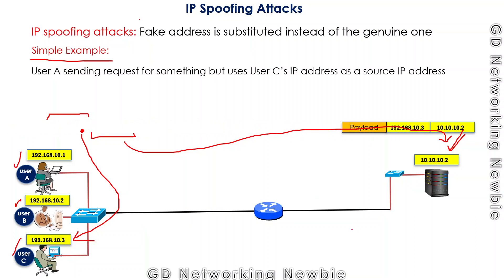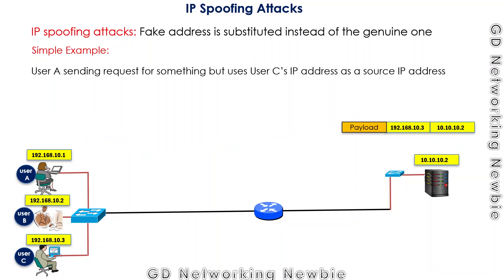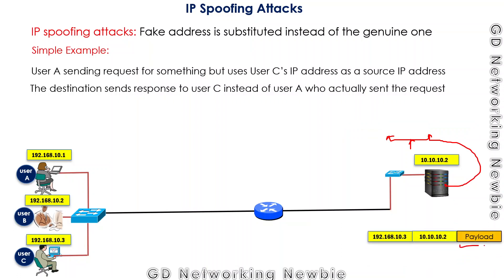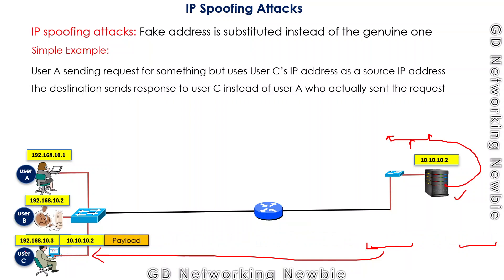As a result, the message is sent to the destination requesting information. At the destination, the machine sees that the information was requested by a host having that spoofed IP address, so it believes that is the source. The destination generates a response packet with the information and sends it to that spoofed IP address — the wrong host — instead of the actual sender.